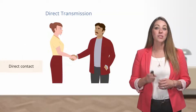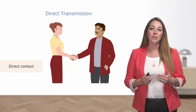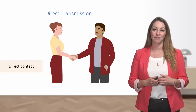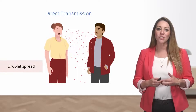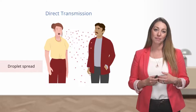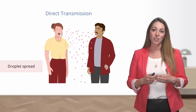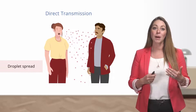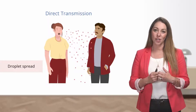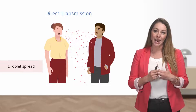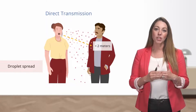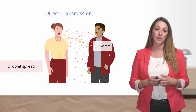Then there's droplet spread, which is another form of direct transmission. For droplet spread to occur, there needs to be direct contact with infected droplets containing the infectious agent. This could occur when an infected person coughs or sneezes secretions directly into the face of an uninfected person, transmitting respiratory infections such as pertussis — or whooping cough. In order for this to occur, people need to be in close proximity, meaning less than two meters from one another, such as sharing a car or a small room.